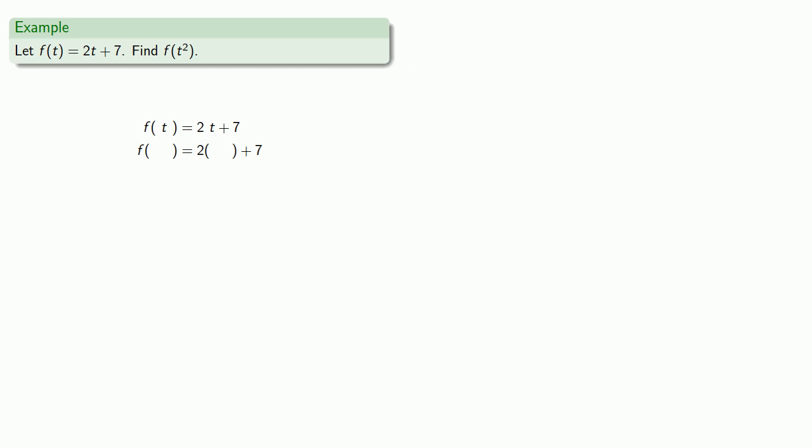I want a t squared in the first set of parentheses, so I'll put it there. And if it goes there, it goes everywhere. And we want a t squared in the second set of parentheses.